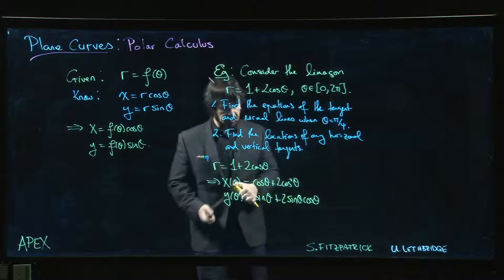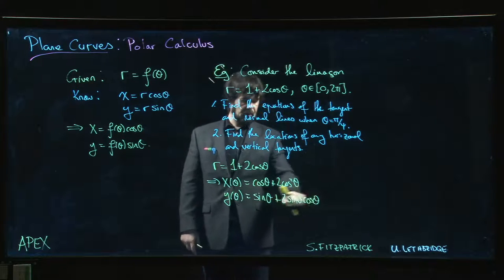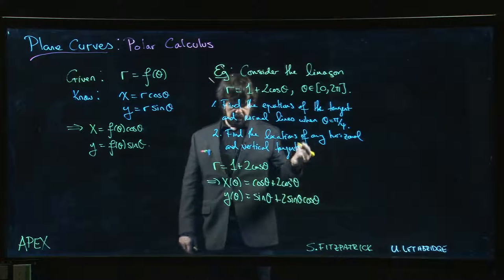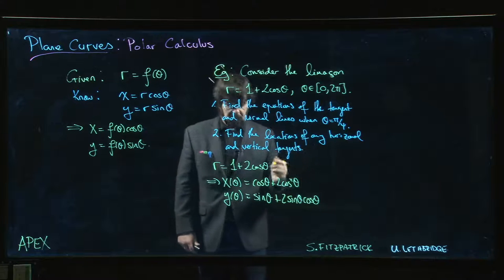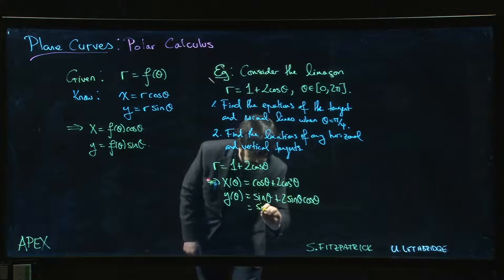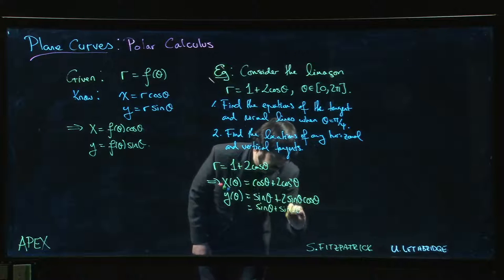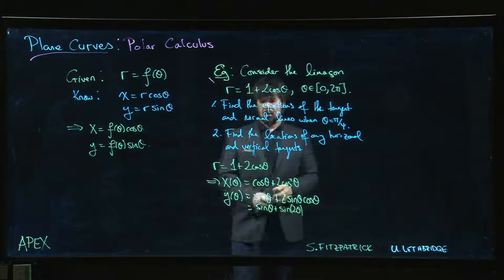And you might find it convenient to take that and write it as sine 2 theta, right? 2 sine theta cos theta is sine 2 theta. We simplify your derivative a little bit, why not. So that's sine theta plus sine 2 theta.